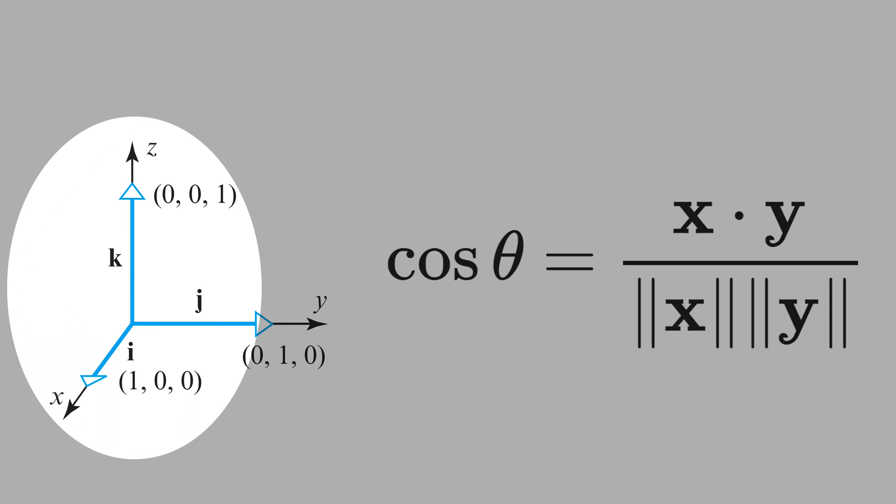And also the dot product of k and i is 0. Therefore, the three vectors are perpendicular or orthogonal to each other. They form a basis in a three-dimensional space.